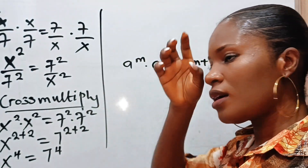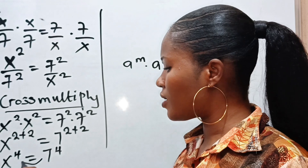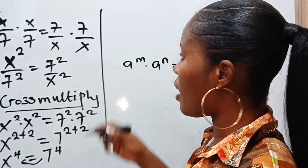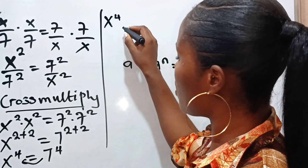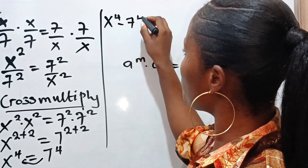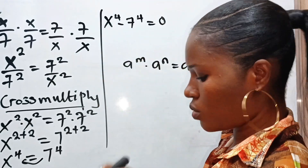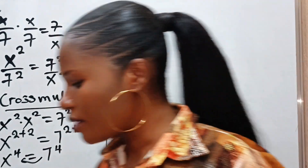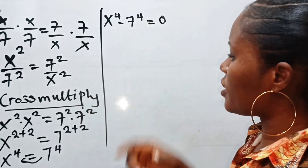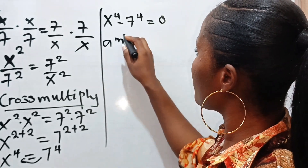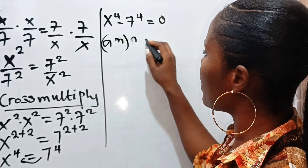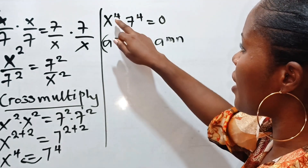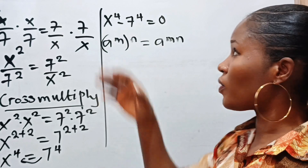Now let's transfer this to the other side. We have x to the power of 4 minus 7 to the power of 4 is equal to 0. Note that a to the power of m raised to the power of n is equal to a to the power of m times n, so we can express this power as a product of its factors.